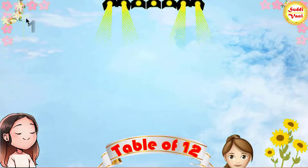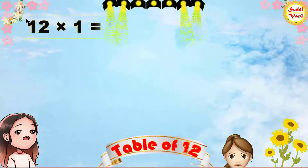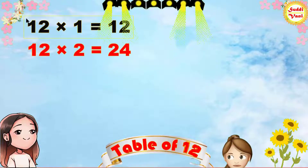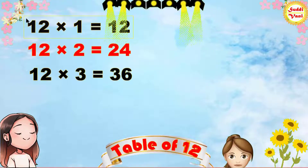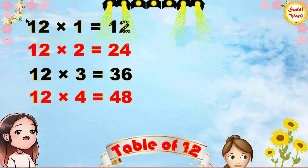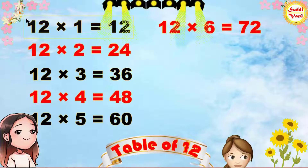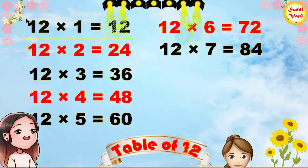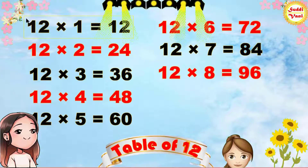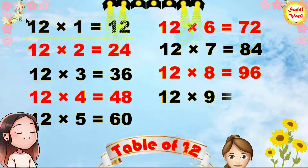Once again: 12 1s are 12, 12 2s are 24, 12 3s are 36, 12 4s are 48, 12 5s are 60, 12 6s are 72, 12 7s are 84, 12 8s are 96, 12 9s are 108, 12 10s are 120.